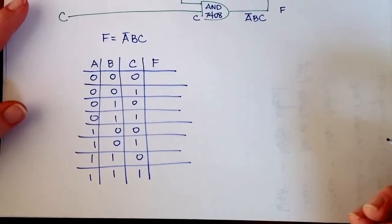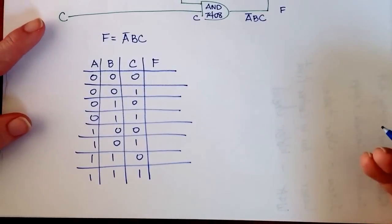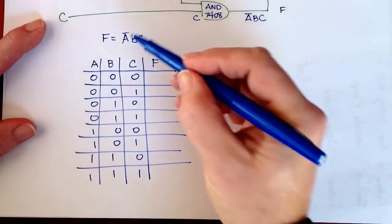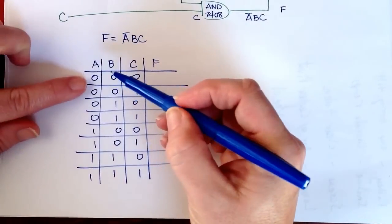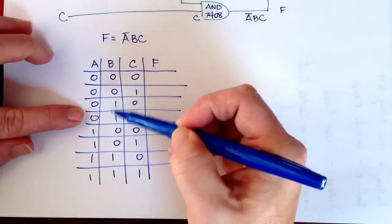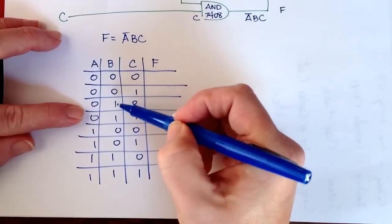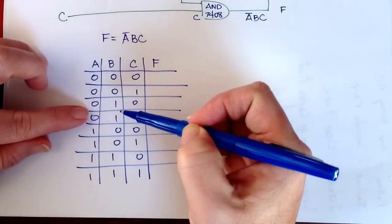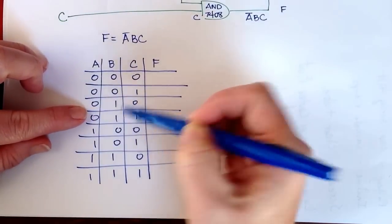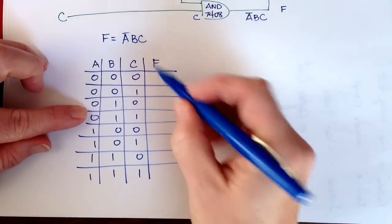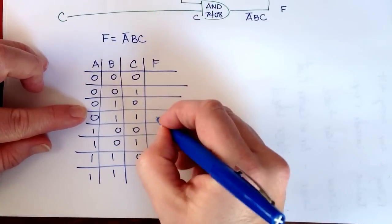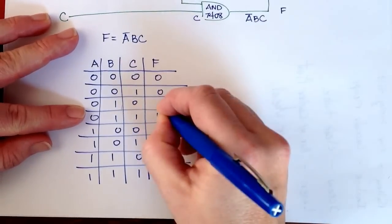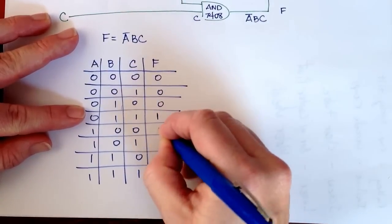NOT A means A is zero, so it's one of these rows. B is a one, so it's one of these two lines, and C is a one — so F equals one here. Everywhere else it is zero.